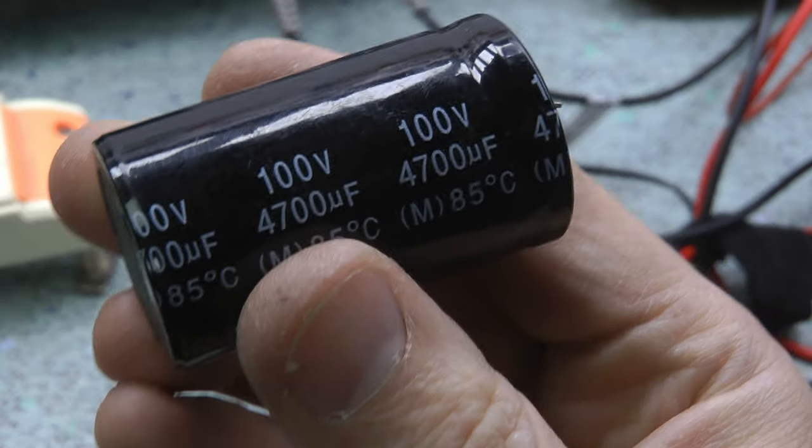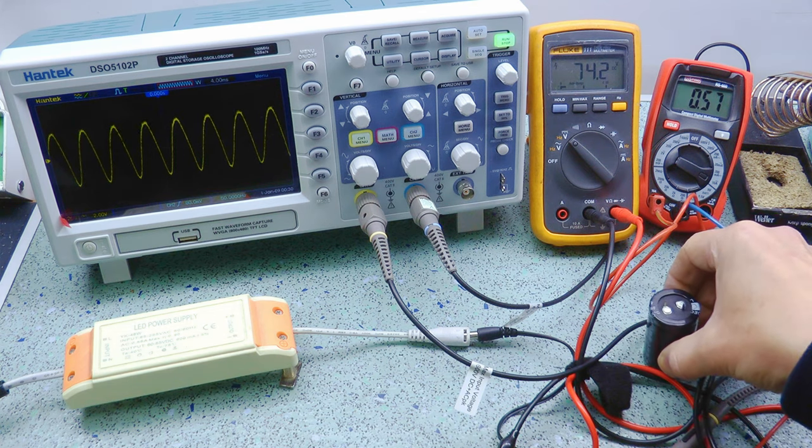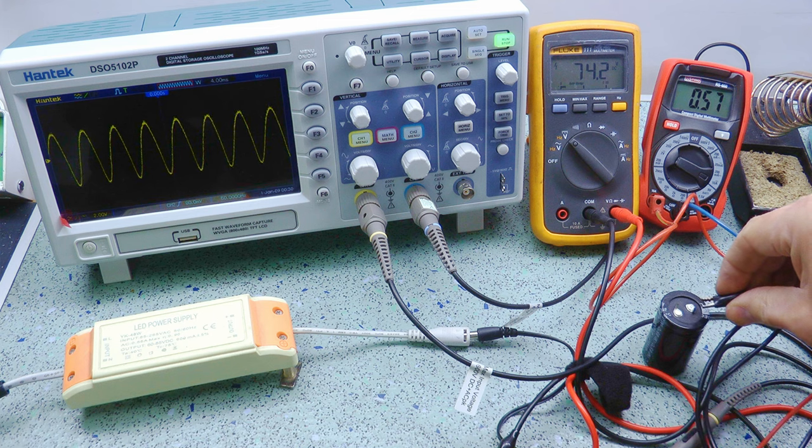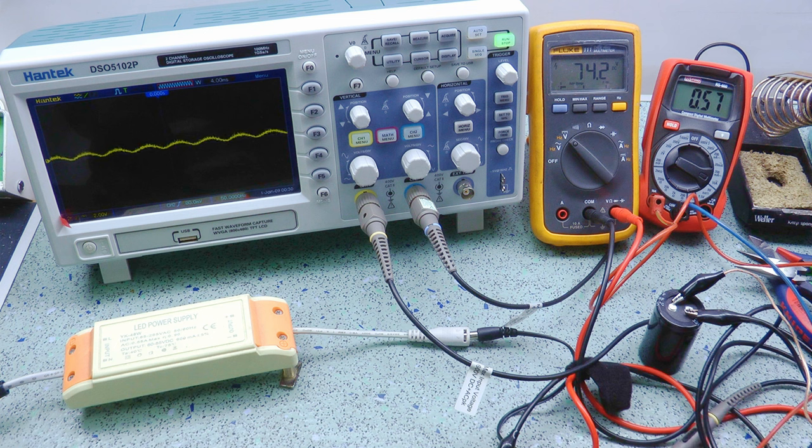The answer was to add a 4700 microfarad capacitor to provide additional smoothing. This may or may not be an optimal value, it's just what I had under the bench. As you can see, it reduces the ripple by a factor of 10.